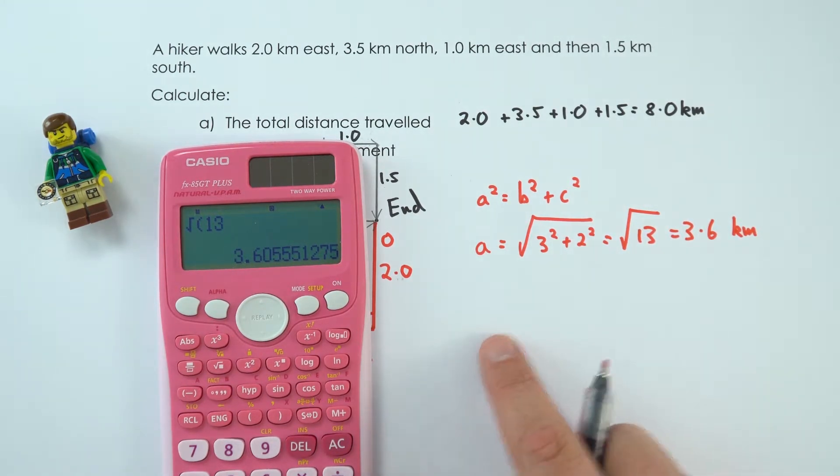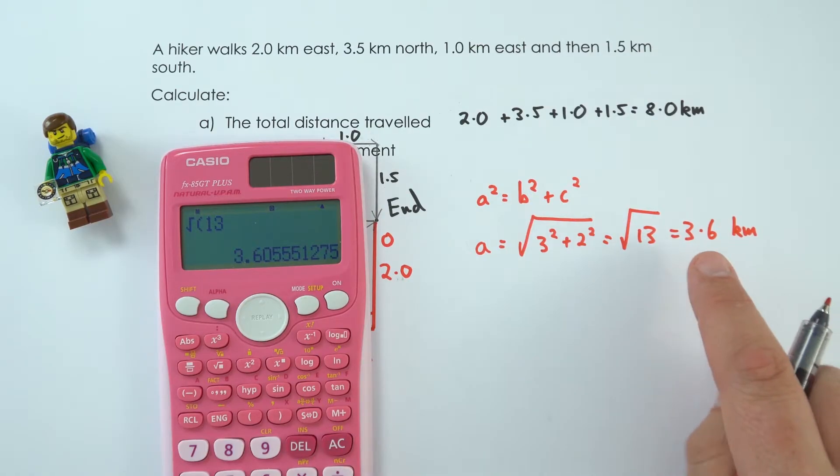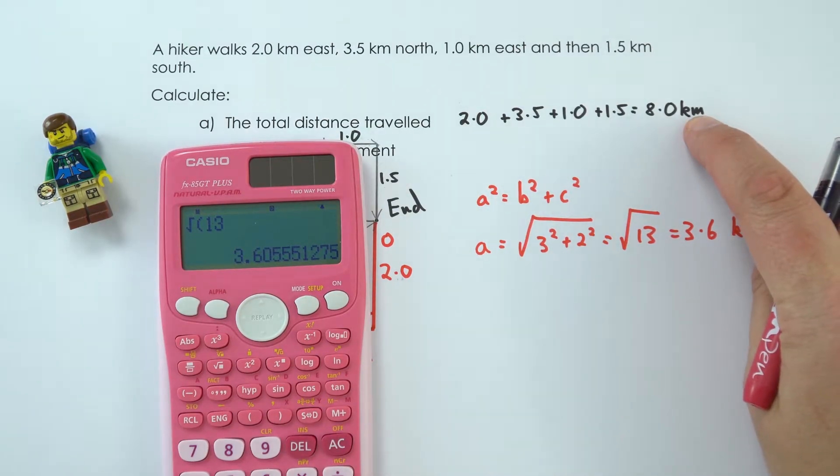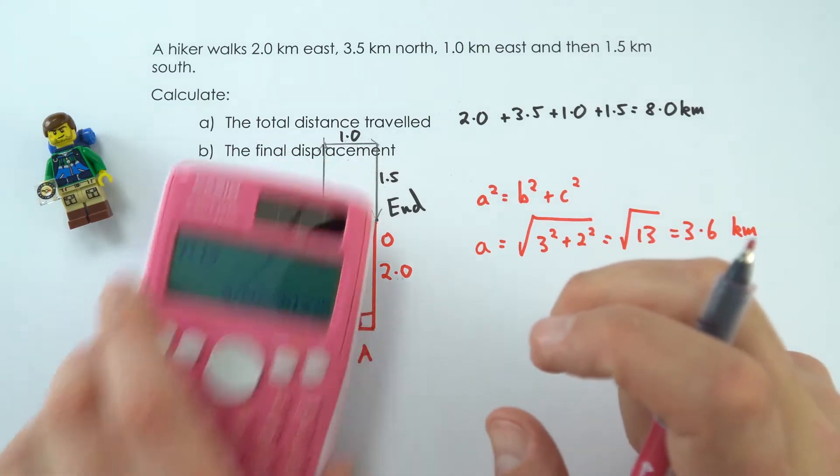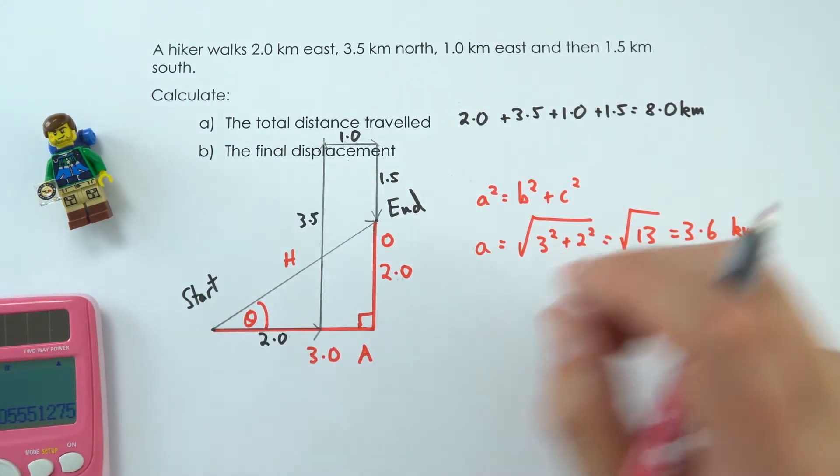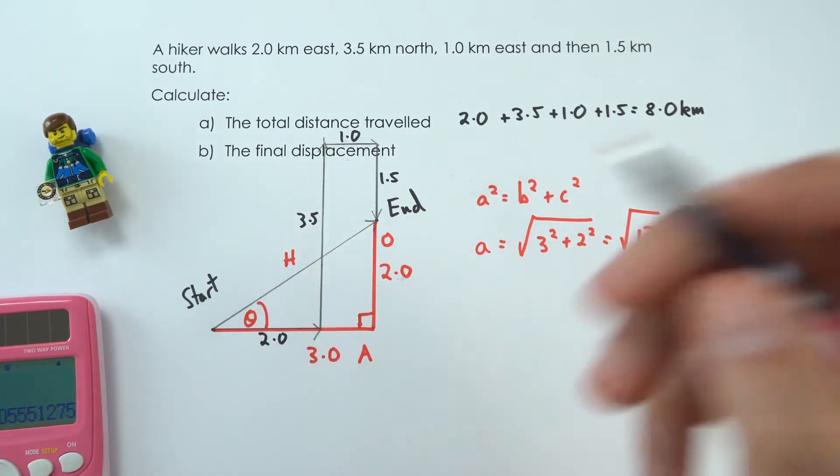So their total displacement is 3.6 kilometers, but their total distance was 8.0 kilometers. This is the thing that people often forget when it comes to displacement—it's not only the size but also a direction. We're going to work out theta here.